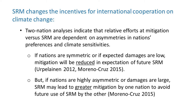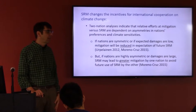People have studied this in a more sophisticated dynamic setting, just starting with two-nation analyses. What they find is that equilibria are dependent upon asymmetries in the nations' preferences and climate sensitivities. If nations are symmetric and expected damages are low, mitigation would be reduced in anticipation of future SRM. But if nations are highly asymmetric or damages are large, SRM might trigger greater mitigation by one nation trying to avoid implementation by the other.